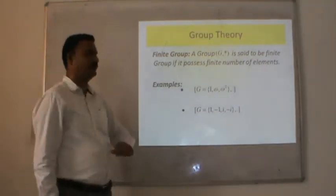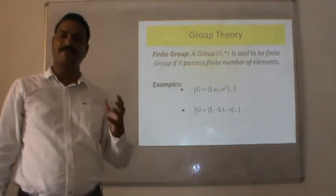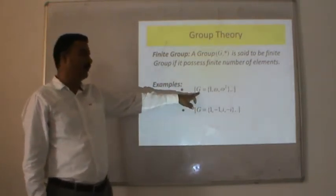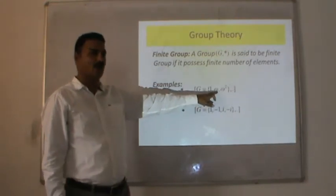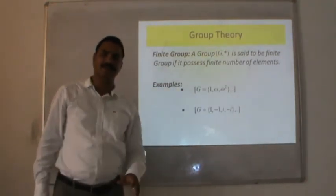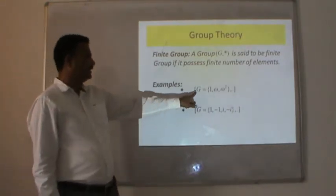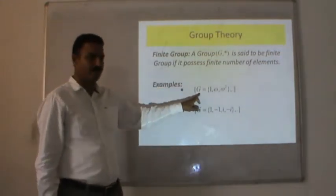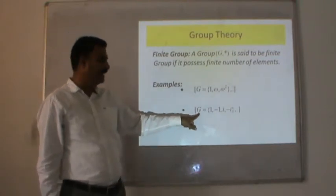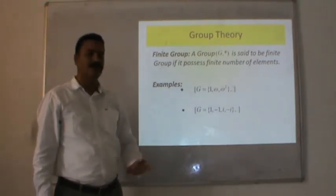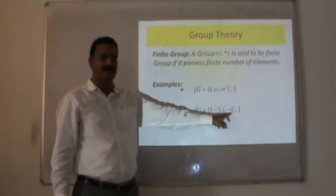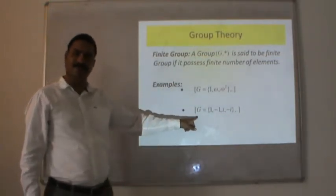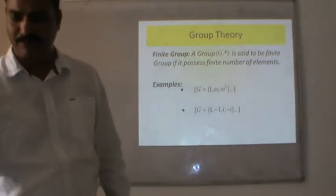Finite group: a group (G, *) is said to be a finite group if it possesses a finite number of elements. For example, G = {1, ω, ω²} forms a multiplicative group — these three elements are the cube roots of unity. Because it possesses only three elements, it is a finite group. Another example: G = {1, −1, i, −i} consists of the fourth roots of unity and is again a multiplicative finite group with four elements.